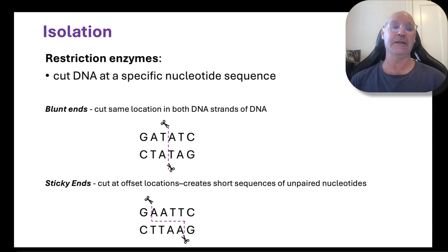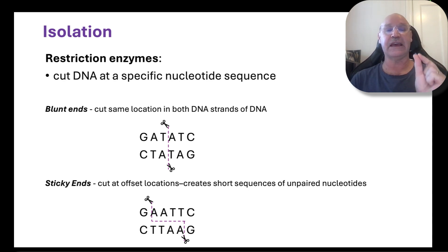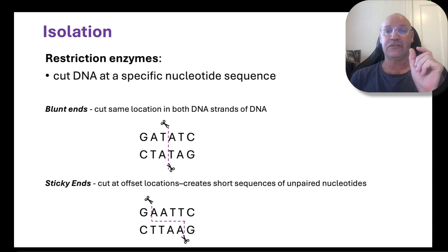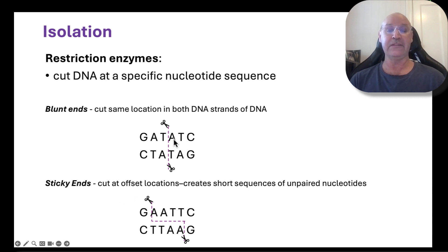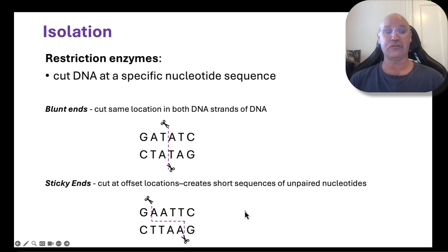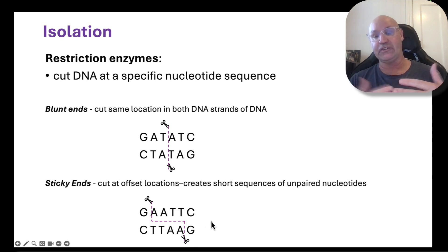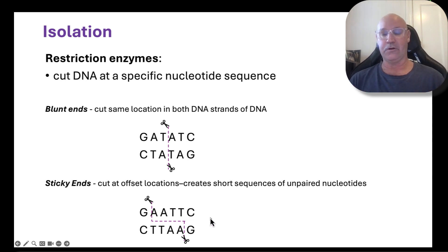For the isolation part, we use restriction enzymes. These enzymes cut DNA at a very specific nucleotide sequence. There are lots of different enzymes that scientists can select depending on what DNA sequence they want to split. Sometimes they cut in blunt ends, where the cut is at the same location in both DNA strands. Other times it's sticky ends, which is beneficial because it's an offset location — you get short sequences of unpaired nucleotides overhanging, and that's helpful for us.